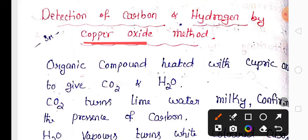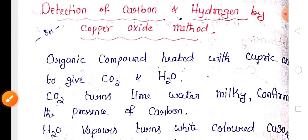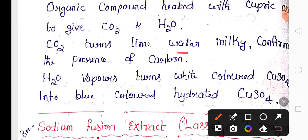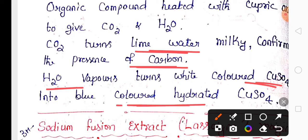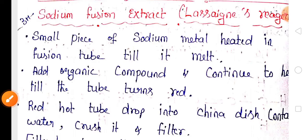When you heat an organic compound in the presence of copper oxide, carbon is released as carbon dioxide and hydrogen is released as water. Carbon dioxide turns lime water milky, confirming the presence of carbon. Water vapors turn anhydrous copper sulfate into blue-colored hydrated copper sulfate, confirming hydrogen.